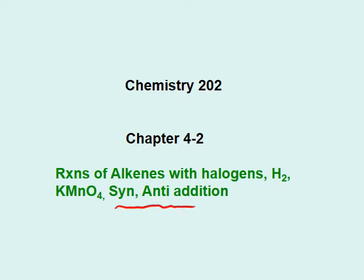Syn addition tells us about the product that's being formed when two groups get bonded from the same side. On the other hand, anti addition is the kind of product you get when two groups get bonded from opposite sides.